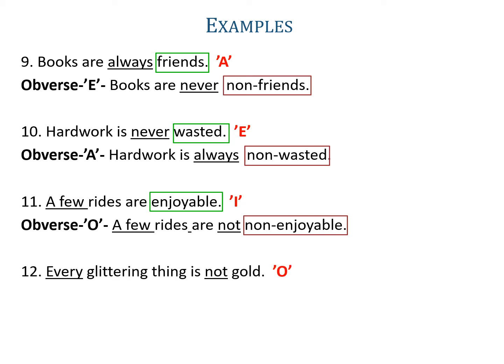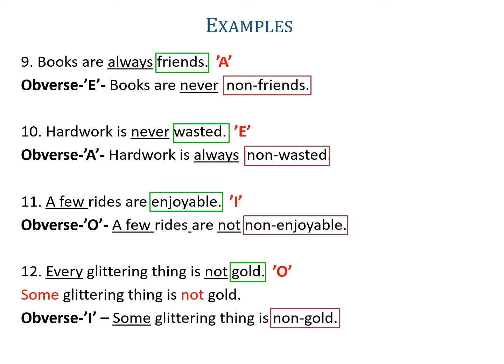Example twelve: 'Every glittering thing is not gold.' Every with not is an O-proposition, so it is better to reduce it to the basic form: 'some glittering thing is not gold'. Now you can make its obverse, that is I. The predicate is gold, so its complementary will be non-gold, and the obverse is 'some glittering thing is non-gold'.